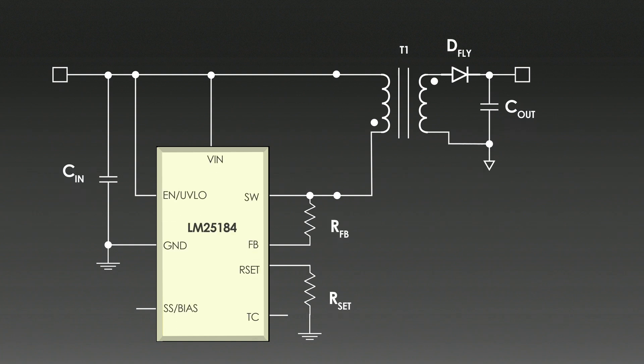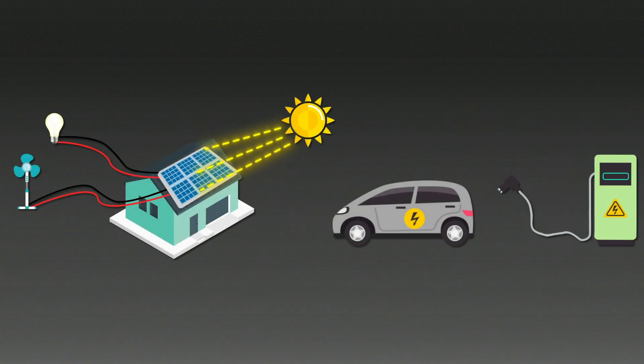Hey there, welcome back to Foolish Engineer. Today we are going to crack open the world of the primary side regulated flyback converter, especially one powered by the LM25184 IC from TI. This circuit is widely used in everything from solar inverters to electric vehicles. And today we are going to break it down piece by piece. Ready to dive in? Let's get started.